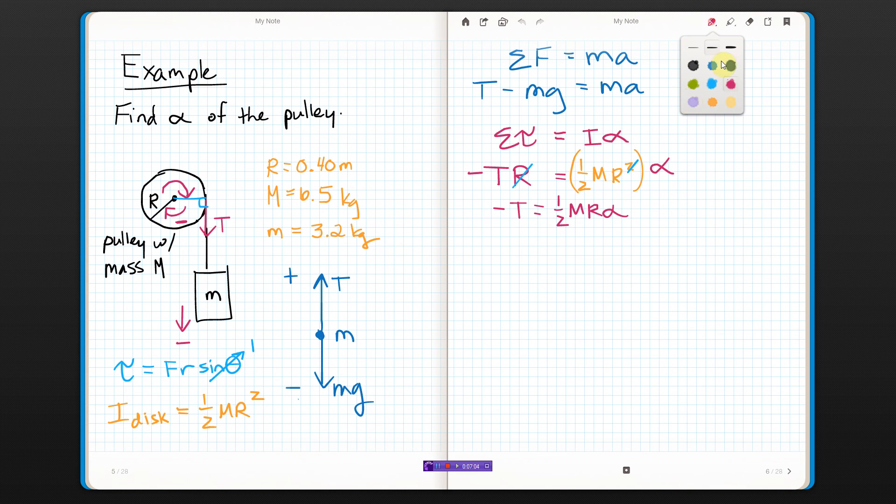How about green? I haven't used green yet. Linear acceleration equals radius. Well, the radius is the distance from here to the point of contact with the linear stuff.